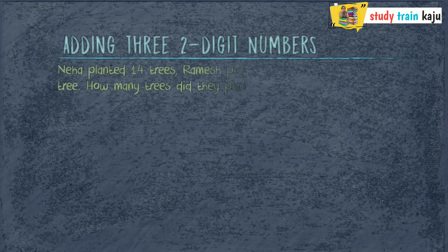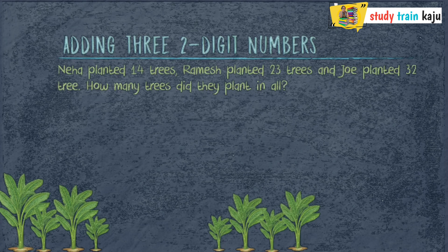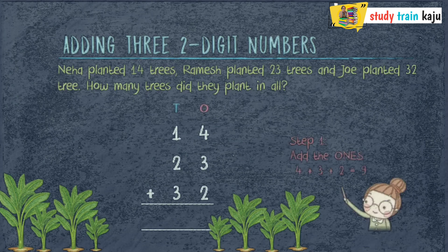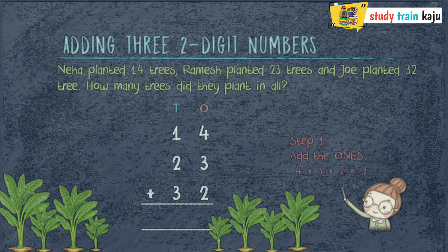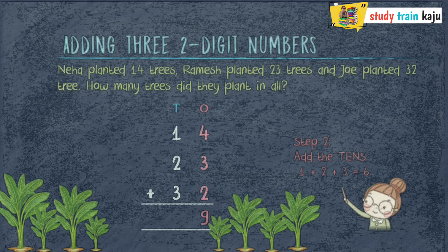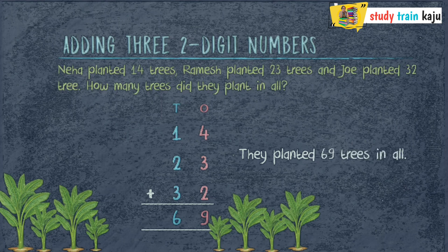Let's do another question. Neha planted 14 trees, Ramesh planted 23 trees, and Joe planted 32 trees. How many trees did they plant in all? Let's add 14, 23, and 32. Step 1: add the digits at the 1's place — 4 plus 3 plus 2 equals 9. Step 2: add the digits at the 10's place — 1 plus 2 plus 3 equals 6. Therefore, they planted 69 trees in all.